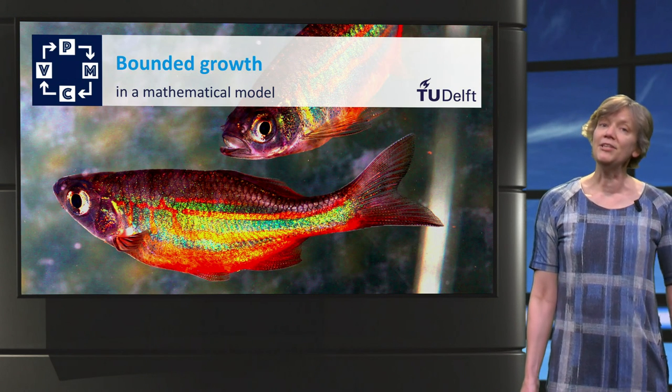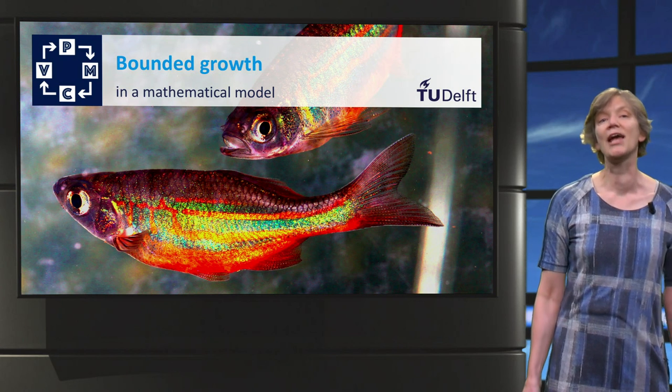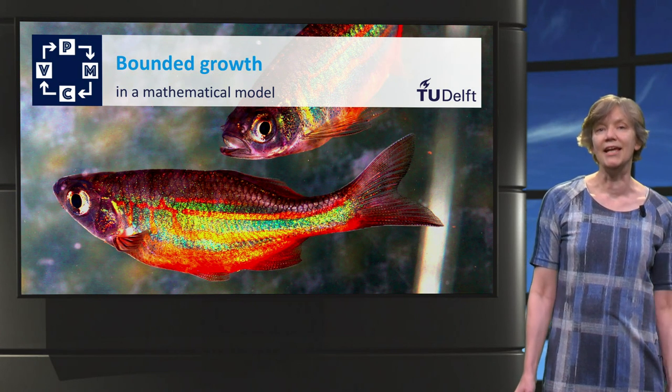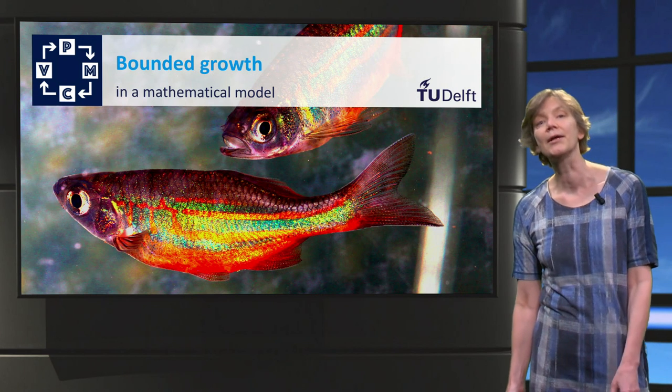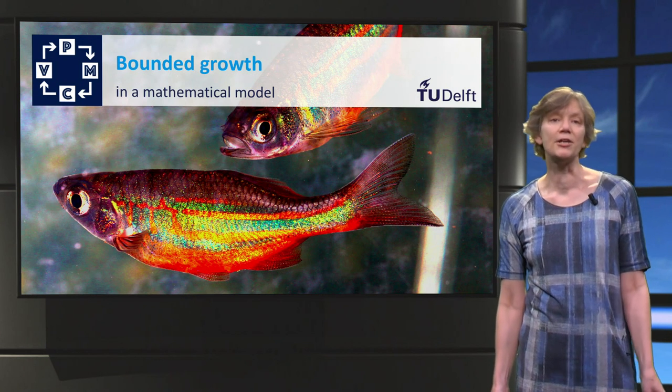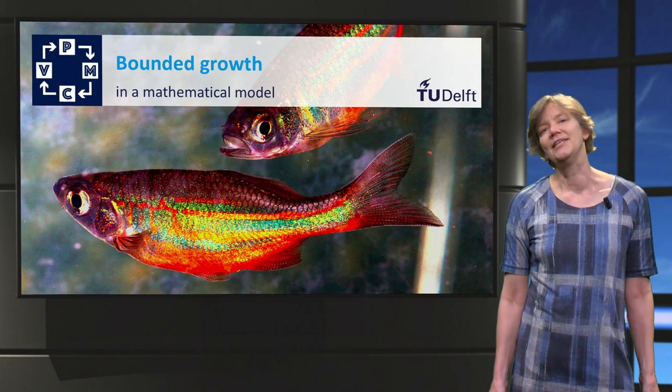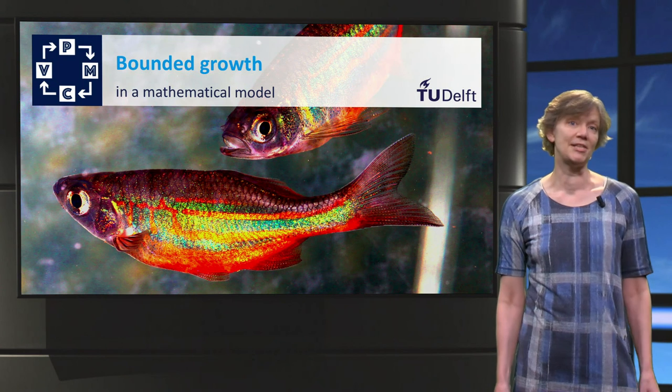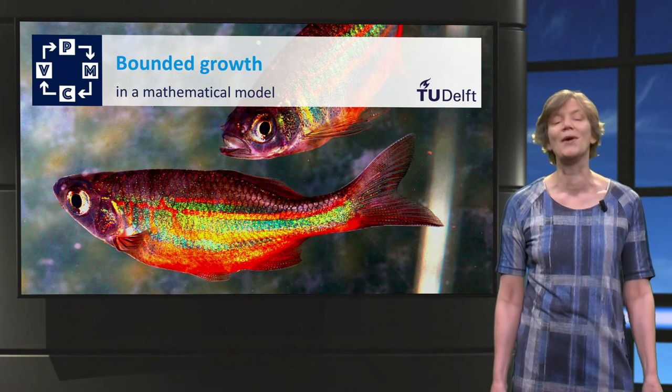In the differential equation for the rainbow fish population, we have adapted the growth rate. When the population size nears the capacity of the aquarium, the growth rate now decreases to 0. Note that this new growth factor is only one of the many formulas that can be chosen to model bounded growth.